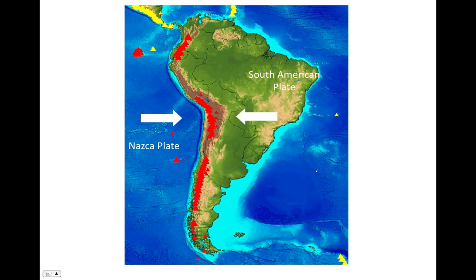Here's an example of oceanic-continental convergence and subduction. The Nazca plate is converging with and subducting under the South American plate. The Nazca plate is oceanic lithosphere, and the South American plate here is continental lithosphere. The shade of blue indicates water depth, with light blue shallow and dark blue deep. We can see a dark blue line — the deep ocean trench — and colored triangles representing active volcanoes running along the subduction zone. The west coast of South America is also prone to large earthquakes, so it has all three features. Because this is oceanic-continental subduction, we have deformation of the continental crust forming the Andes.